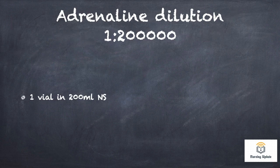Adrenaline dilution 1 to 200,000 — 1 ampule mixed in 200 ml NS. Usually 10 ml at 1:1000, so multiply to calculate the answer.